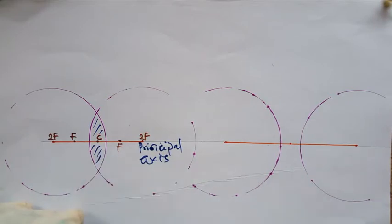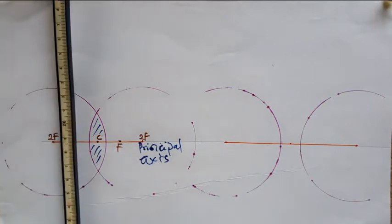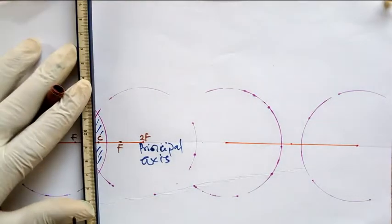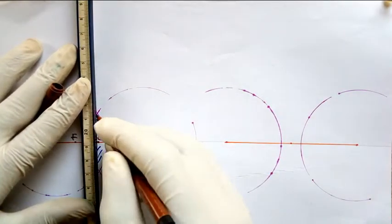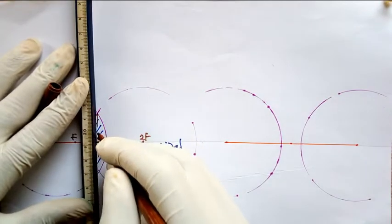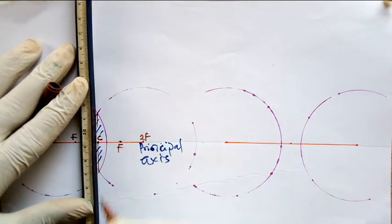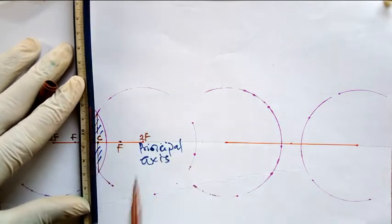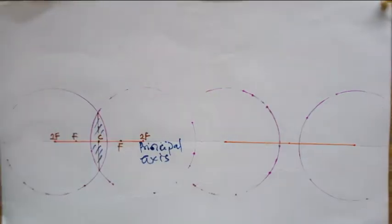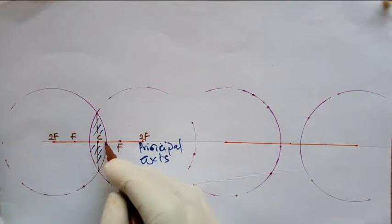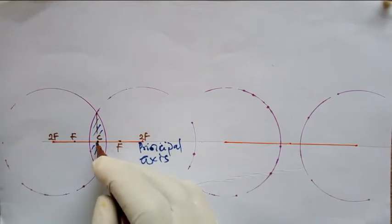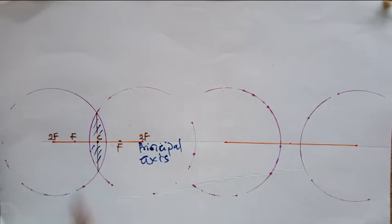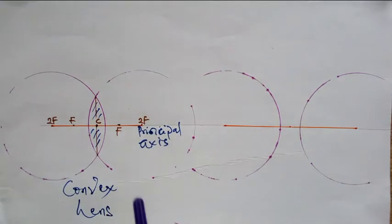From the optical center, you could just draw a straight line through the cross at the center of the lens. This midpoint here, this cross at this junction, is called the optical center. This lens is called the convex lens.